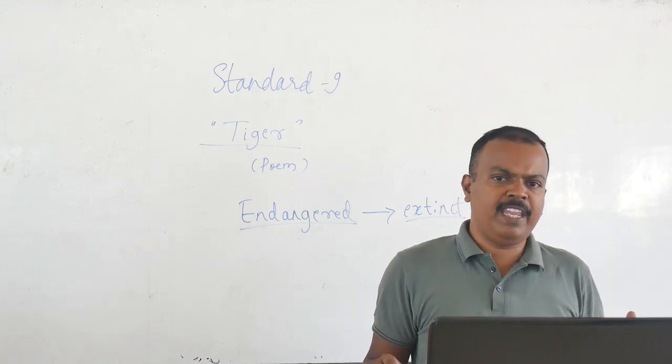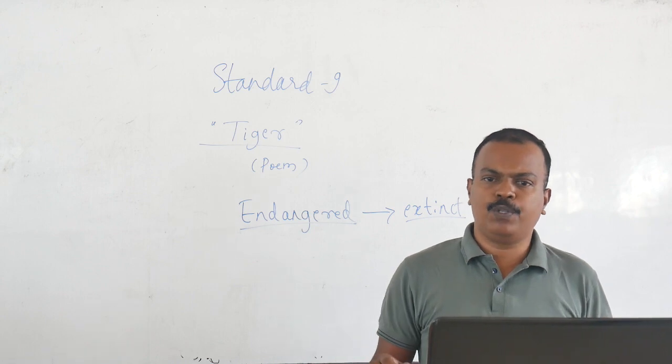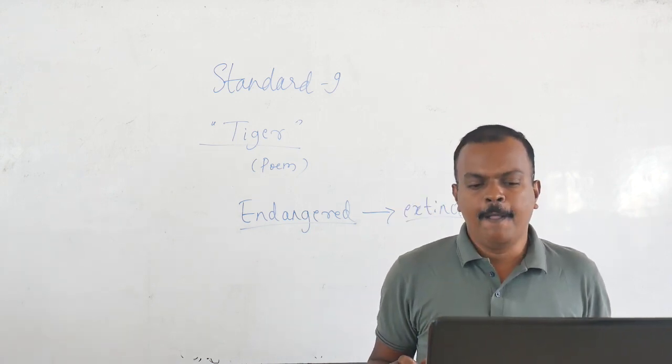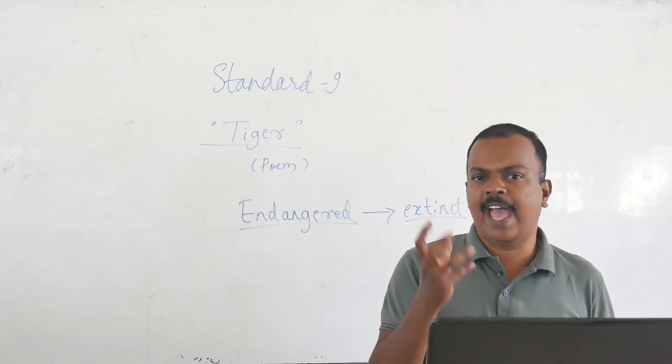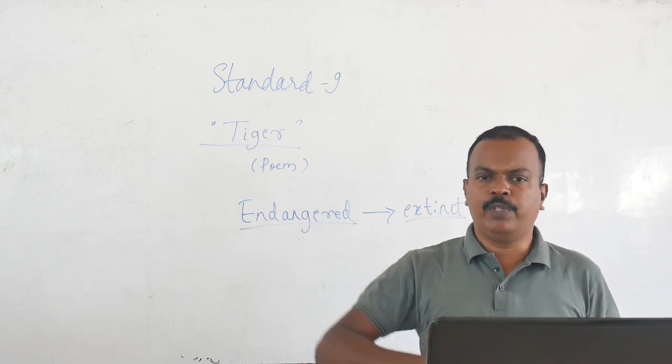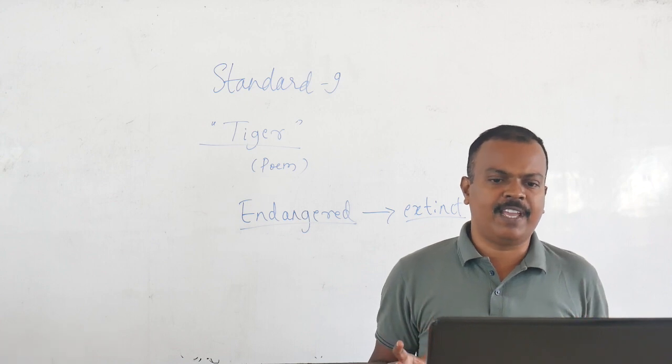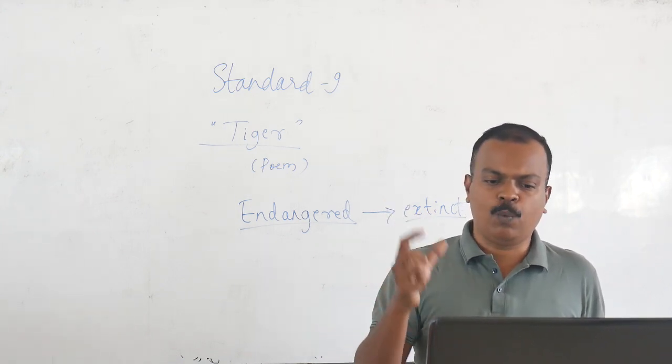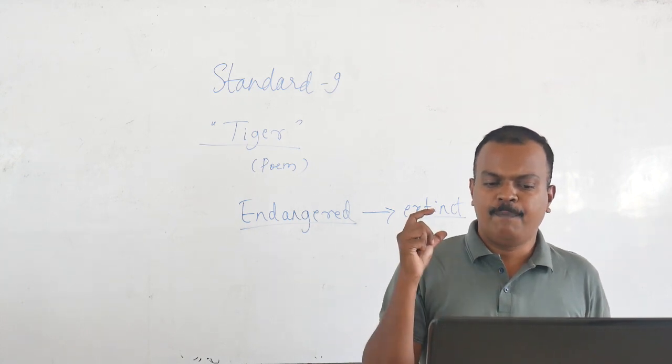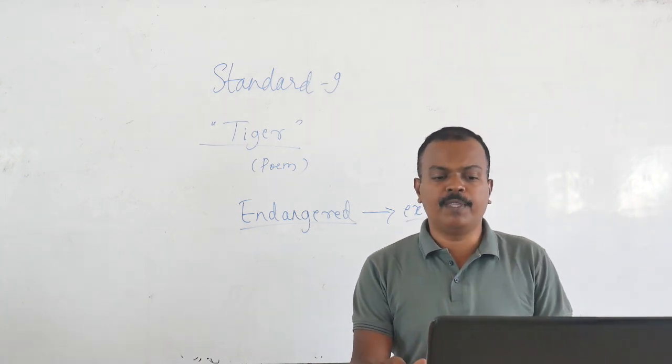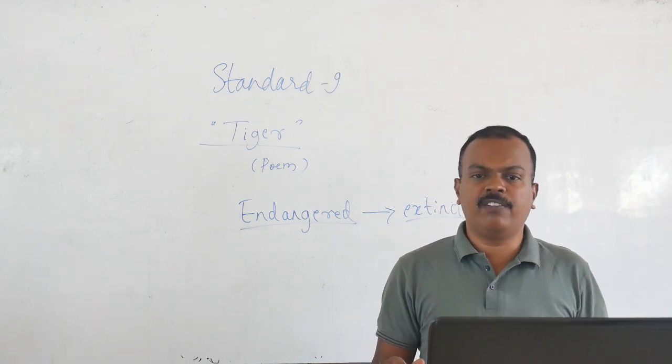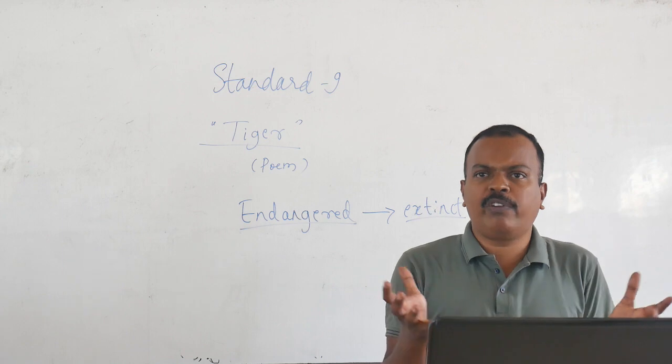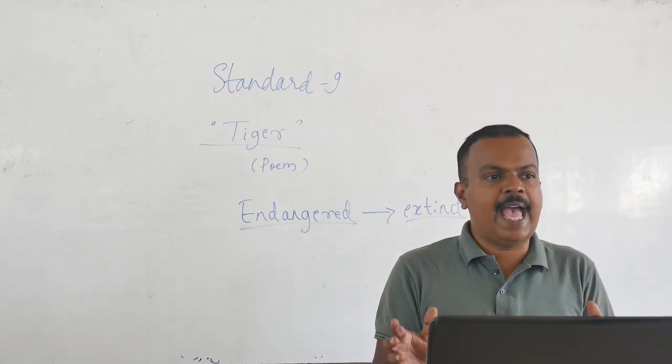So he says the tiger isn't burning bright. So what does it mean when we say burning bright? Well, it refers to the golden and black stripes on a tiger's body. That shimmer. They have a certain glow about them. So they look wonderful, they look majestic and fierce as well. That's what refers to when we say burning bright. So the poet says, the tiger is not burning bright. That means the glory of the tiger has diminished.